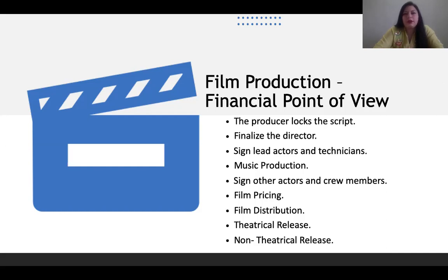The first phase of film finance release happens when the producer locks the script — when the entire script is ready and handed over to the producer. As I discussed in yesterday's lecture, 25% of the amount is released at that point. So the first amount is released when the producer says 'this is the final script and we are ready to work on it.'